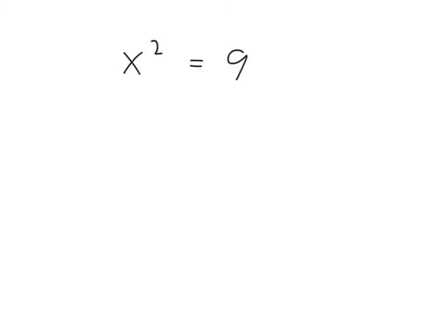Well, one way of doing it is just to imagine what squared would give you 9. So if you know your squares, you know that 3 squared gives you 9. So you can say x is equal to 3. That's pretty easy to do.